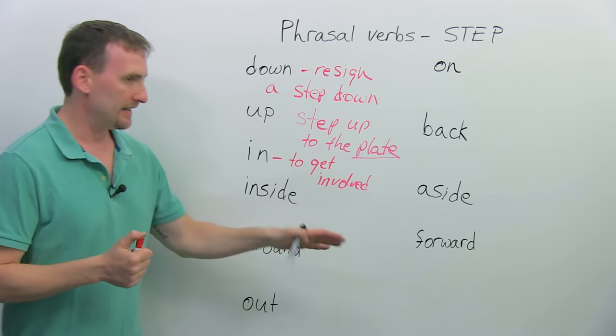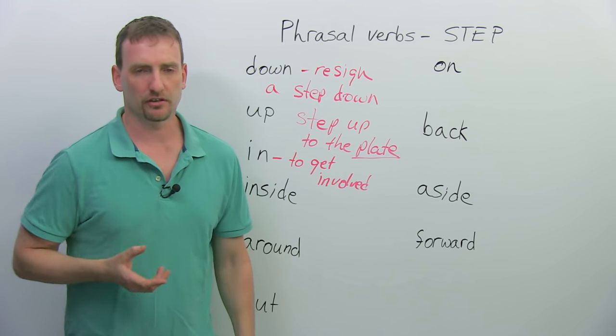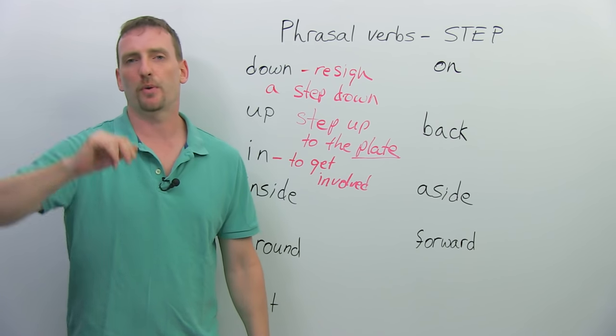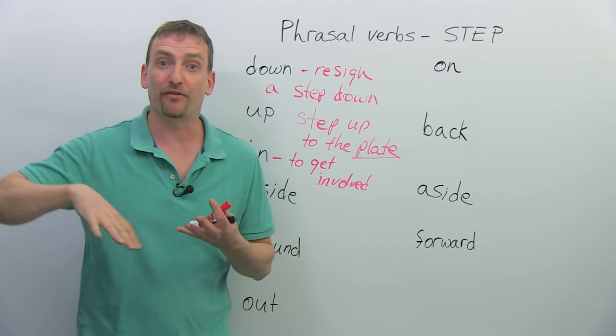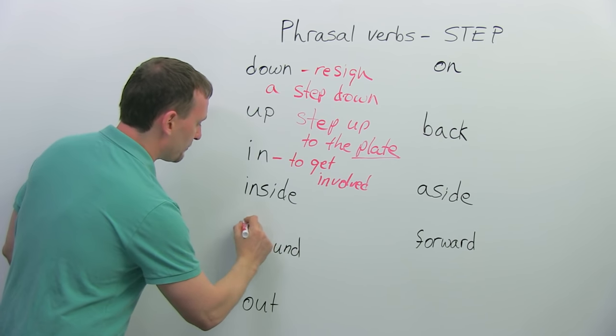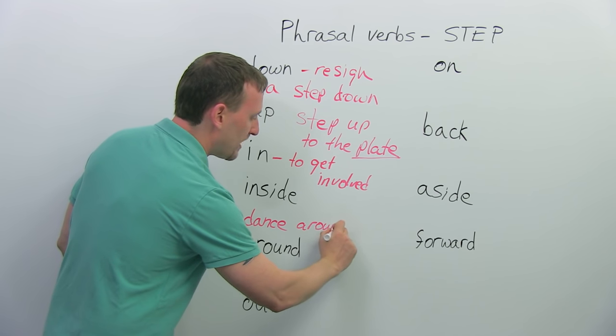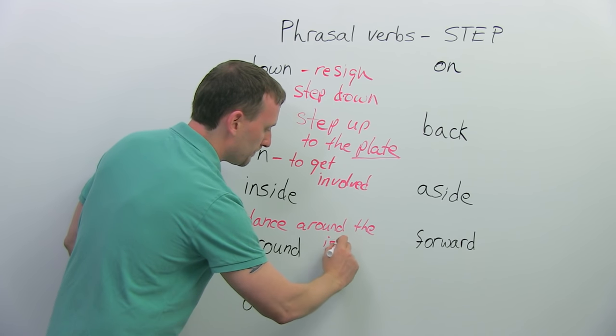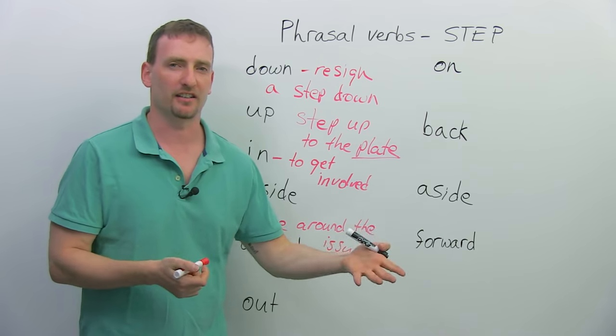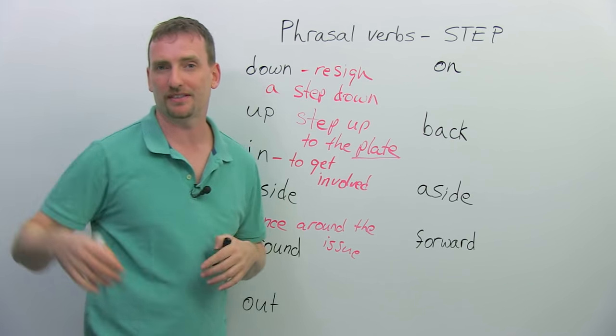Step around. Now, let's say I'm a reporter, and you're a politician, and I ask you a very difficult question, and you don't really want to answer it. So, you step around the question. You step around the issue. It means you avoid answering it directly. Another way we sometimes hear it is dance around. Or you'll hear step around or dance around the issue. This is very common with politicians who don't like to answer questions directly. In fact, they don't like direct answer questions, so they just step around the question and talk about something completely different.